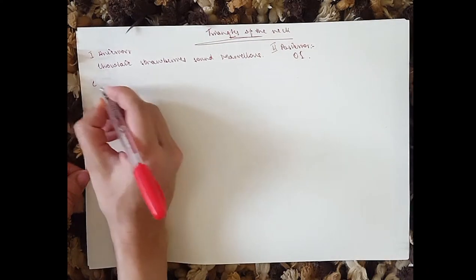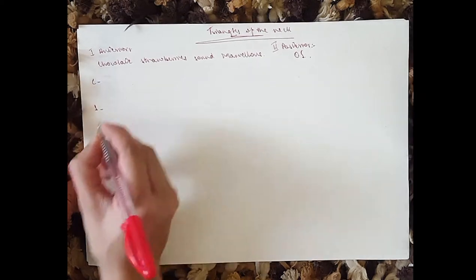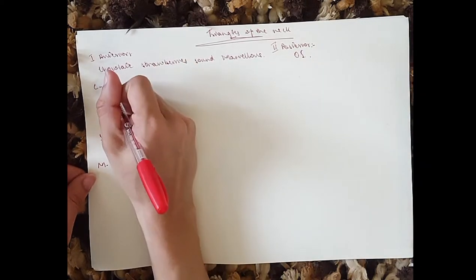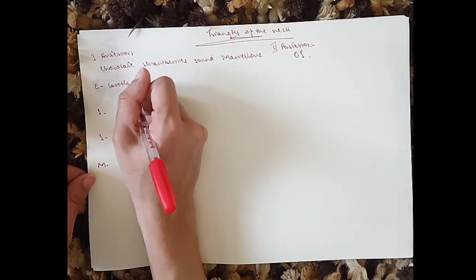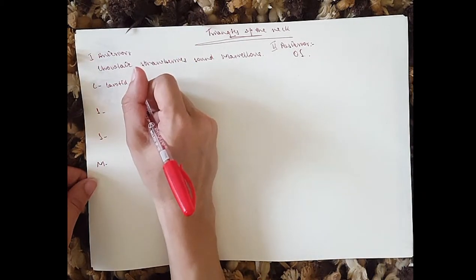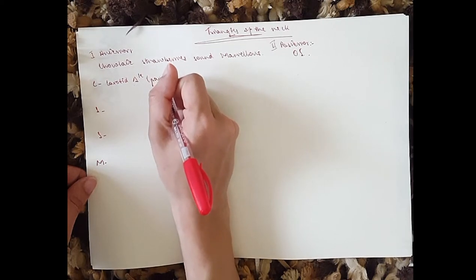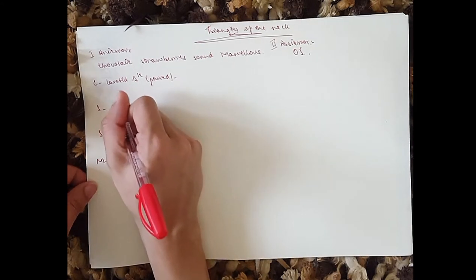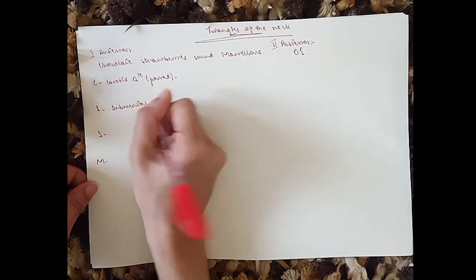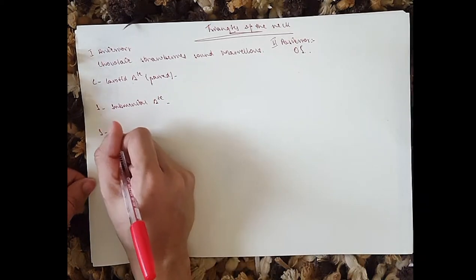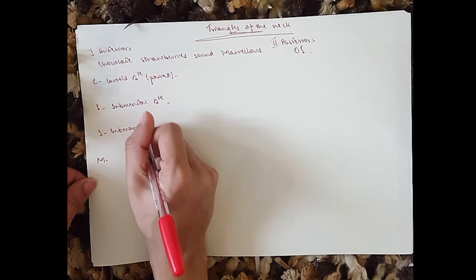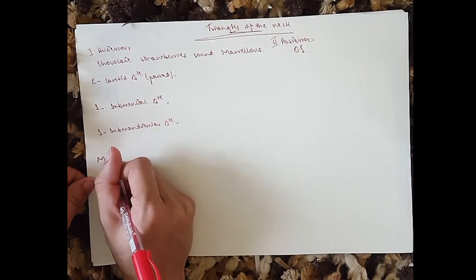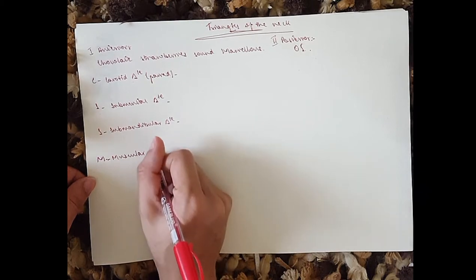So first we start with C, S, S, and M. C — chocolate — stands for the carotid triangle, or caroticum triangle, which is paired. Then for S, we've got the submental triangle. For the other S, we've got the submandibular triangle. And then for the last one, we've got the muscular triangle.